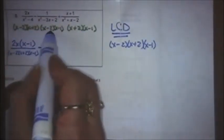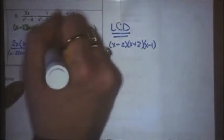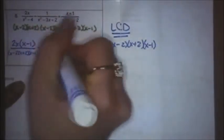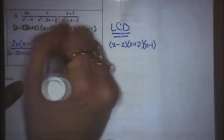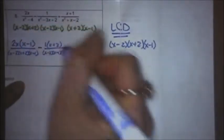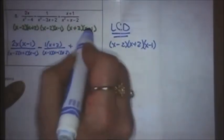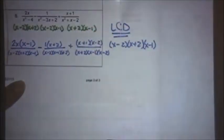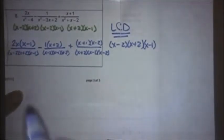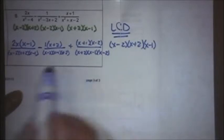My second fraction is missing the x plus 2, so I put that on top and on bottom: x minus 2, x minus 1, x plus 2. My third fraction has x plus 2 and x minus 1 already written, and is missing the x minus 2, so I put that on both top and bottom. My LCDs are in a different order on the bottom — that's okay because multiplication is commutative, it can be done in any order. As long as it has all three factors, the order doesn't matter.